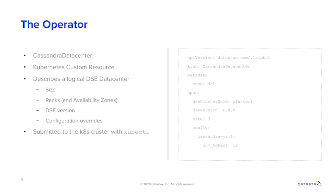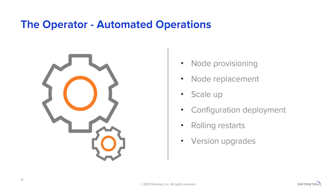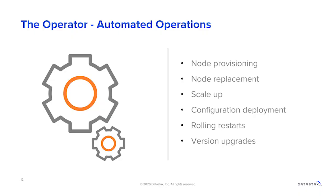With DSE 6.8, we're supporting CNCF-certified platforms right out of the gate — GKS and the open source Kubernetes platforms — and you'll see us rolling out certification for additional platforms as we move along. Items in scope right out of the box with 6.8 that are ready for GA include: provisioning nodes, replacing nodes, scaling up, configuring deployments, rolling restart capabilities, and version upgrades.